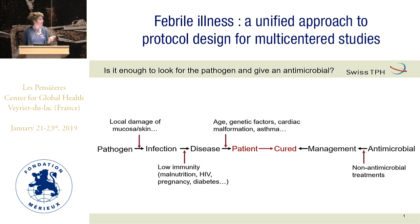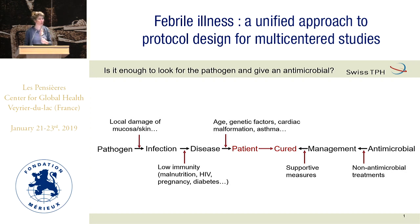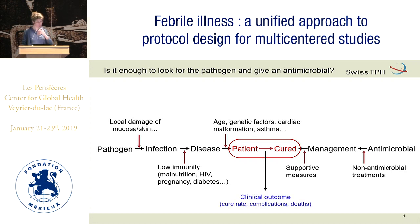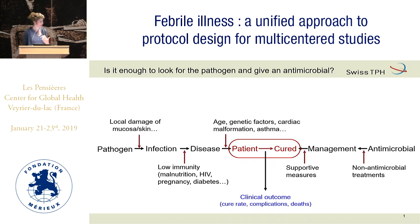Management also does not necessarily mean curing the patient. You need supportive measures immediately when the child or adult comes with severe disease, and also for long-term prevention of consequences. What really matters is the patient we want to cure, not the pathogen. This is why when looking at interventions to improve management of febrile patients, we should take clinical outcome as our measure — cure rate, complications like secondary hospitalization, sequelae, and death.